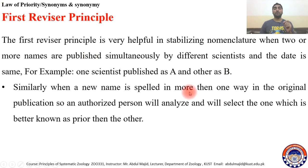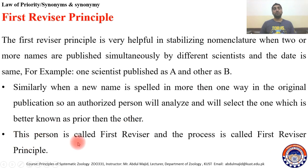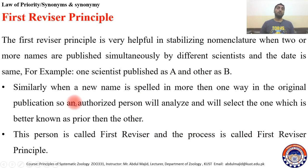This decision is made by the First Reviser under the First Reviser Principle, and he has full authority. He can choose A or he can choose B, according to the rules of the Zoological Code. He will pick the better known or prior one, and the person who selects the valid name is known as the First Reviser, and the process is called the First Reviser Principle.